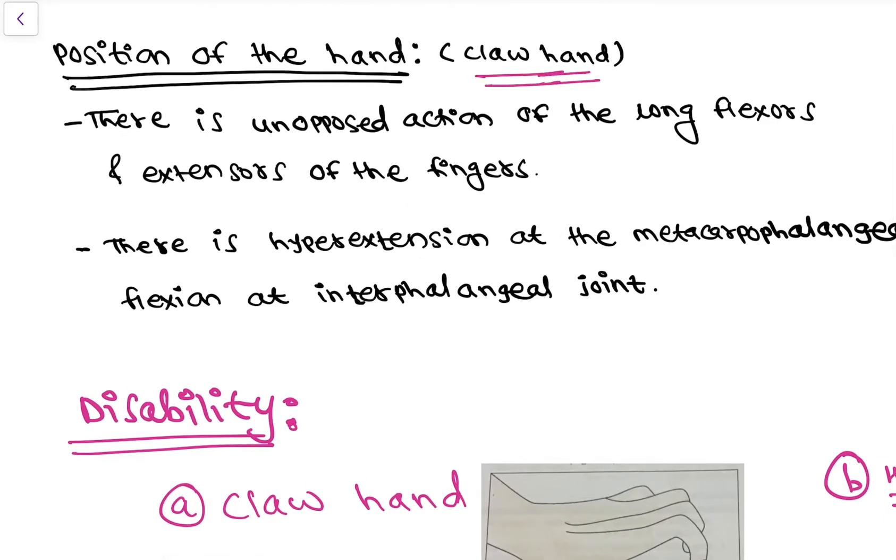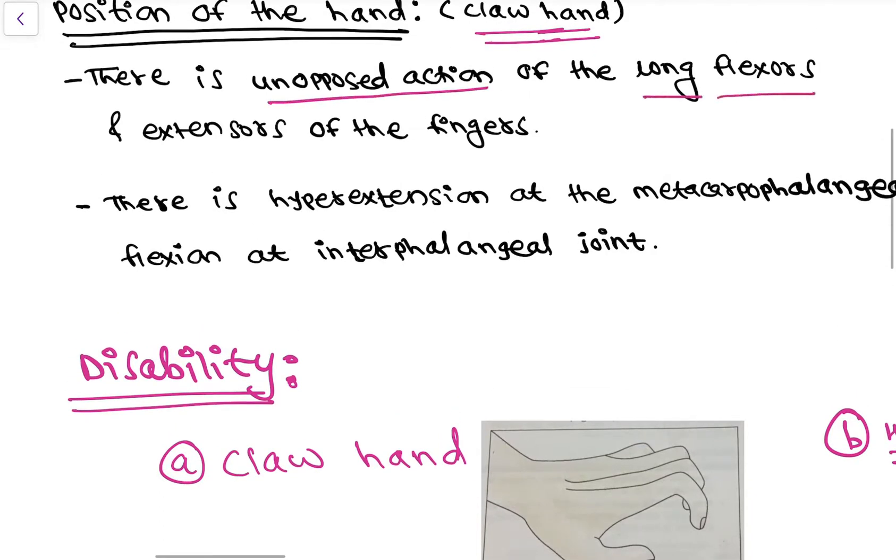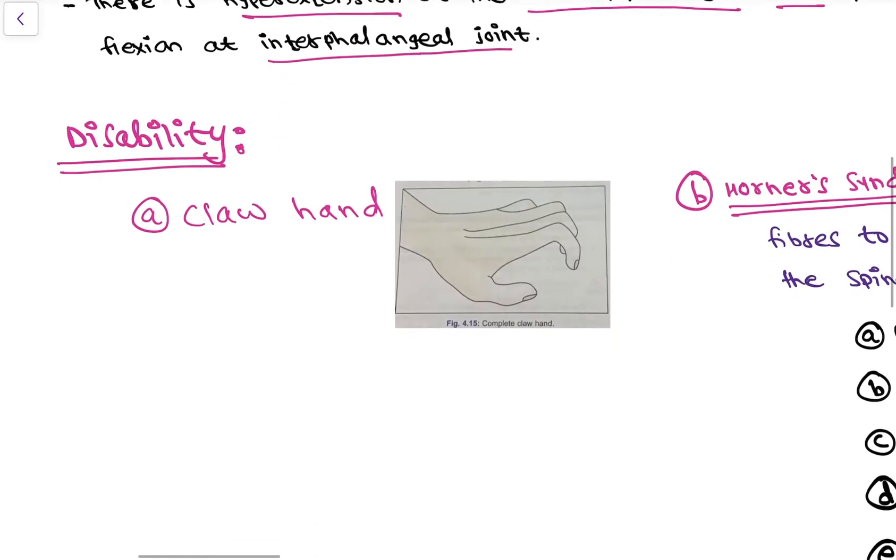The position is because of the unopposed action of the long flexors and extensors of the fingers, and the position is like hyperextension at the metacarpophalangeal joint and flexion in the interphalangeal joint.